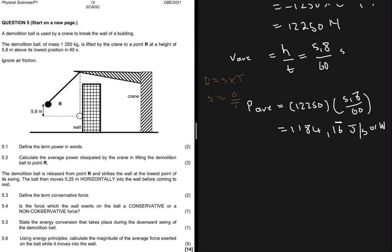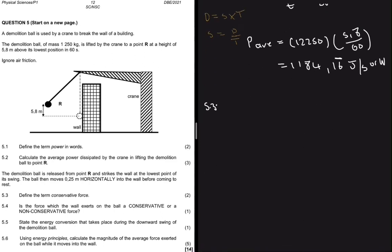Let's say 5.3 and then let's sketch that down. So we're moving from point R and then we hit the wall. After we hit the wall we move horizontally, and that's what the information is saying, and then we come to rest.